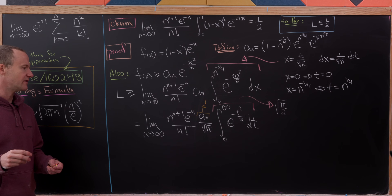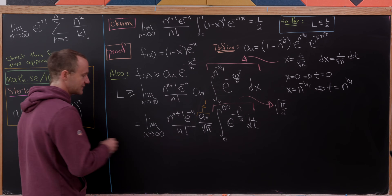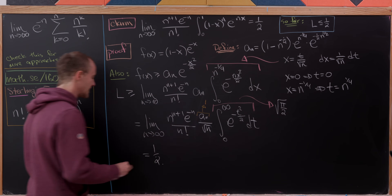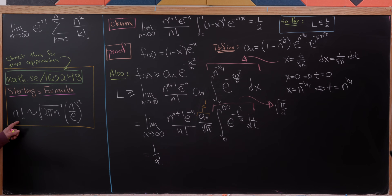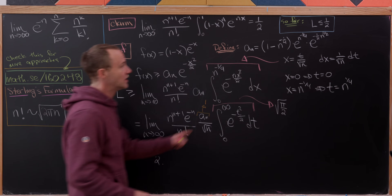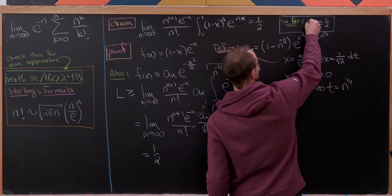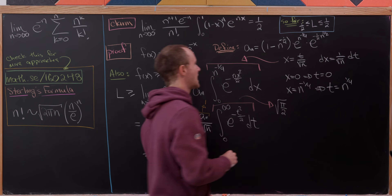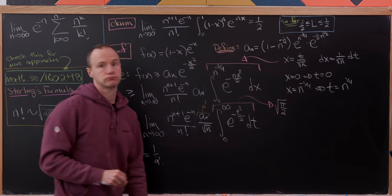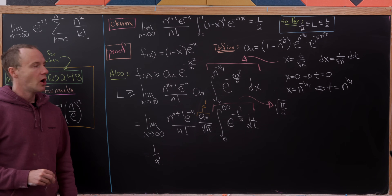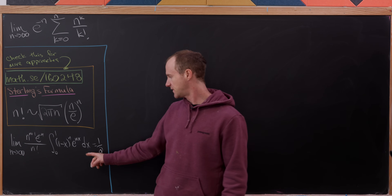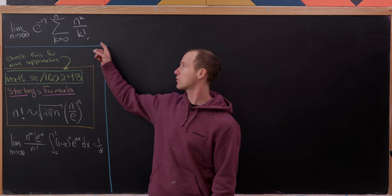The remaining factors are exactly the same as in the upper bound calculation, so applying Stirling's formula again gives a limit of one half. Therefore our limit is pinned between one half and one half, which means the limit of n^{n+1} e^{-n} over n factorial times the integral from 0 to 1 of (1 minus x)^n e^{nx} dx equals one half. Now we move on to the main result.